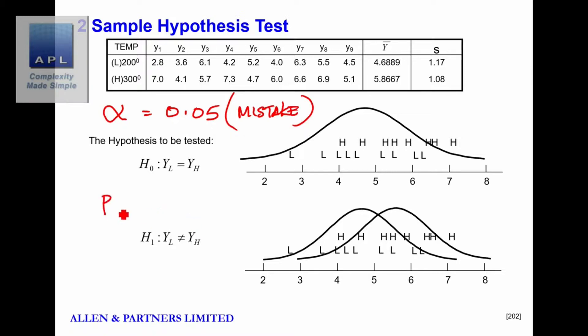It is below our alpha value, and therefore we conclude the alternative hypothesis. Our new temperature made a significant difference to the result.